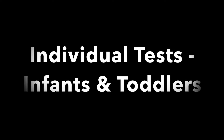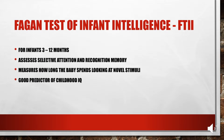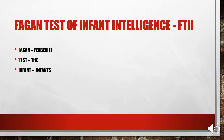Moving on to individual tests for infants and toddlers. First, the Fagan Test of Infant Intelligence, FTII, used for infants ages 3 to 12 months. It assesses selective attention and recognition memory by measuring how long the baby spends looking at novel stimuli, and it turns out to be a good predictor of childhood IQ. On the EPPP they'll just write FTII. You can remember it with this mnemonic: think about 'ferberizing the infants instantly' — picture babies soothing themselves by looking at novel stimuli around their rooms, and remember that selective attention is a good predictor of childhood IQ.